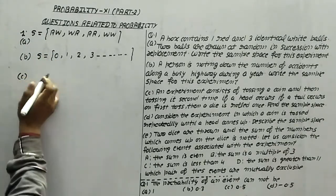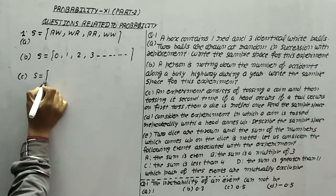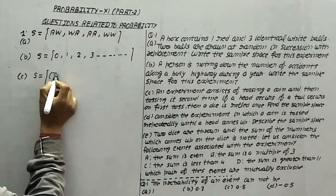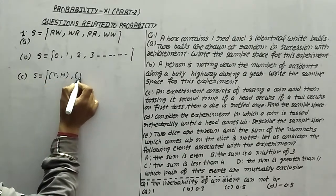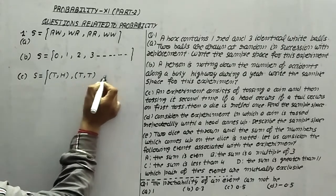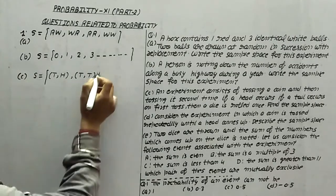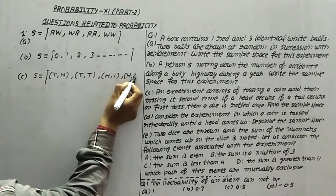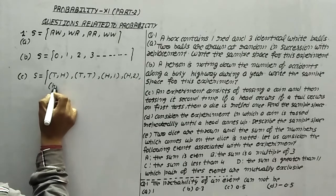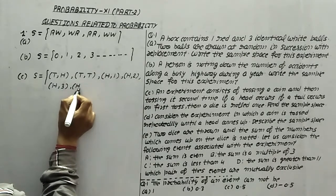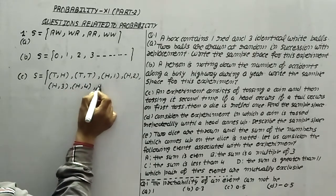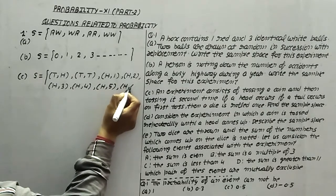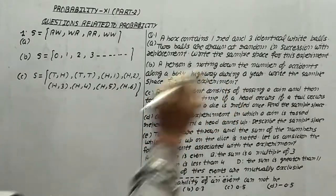For this part, if tail is coming, then we have to roll or toss the coin again, so sample space will be TH, TT. But if head is coming, then he is rolling a dice, meaning H1, H2, H3, H4, H5, H6. This will be the sample space for this part.